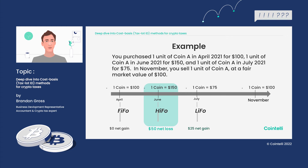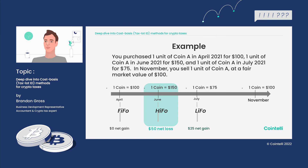People will typically go with FIFO if they want to increase their holding period to get into the long-term tax bracket. For example, if you purchased in April 2020 instead of April 2021 and sold in November, that coin would fall into your long-term rates. That's an example of why you'd choose FIFO over HIFO or LIFO — and also because it's much simpler: first in, first out.